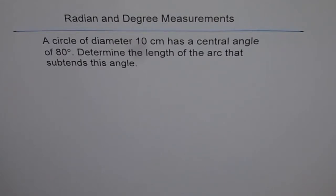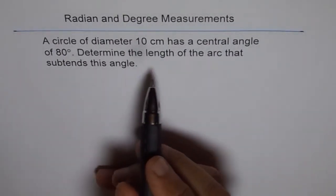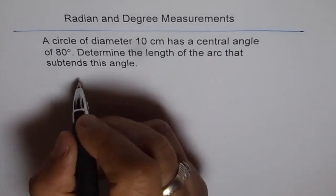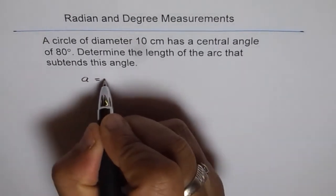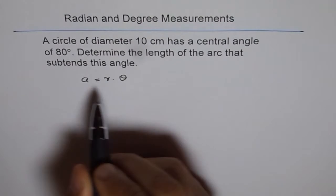Write down your answer and then look into my solution. We need arc length. The relation for arc length is A equals R theta, where theta is in radians, not in degrees.